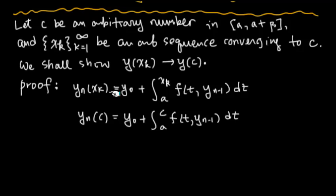By Picard iteration, y_n of x_k is going to be this iteration. Instead of x in there, we have x_k. This one here, instead of x there, we have c, and x_k is very close to c. Then we have y_{n-1} and y_{n-1}. So instead of taking the difference of these two, we're going to take the difference and see if we can maneuver around.